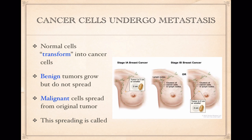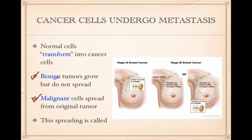Normal cells transform into cancer cells, and there are lots of different reasons for why a normal cell would transform into a cancer cell. The words benign and malignant are good to know. Benign cells are cells that have transformed and are growing tumors, but these tumors are not spreading. The word malignant is reserved for cells that are growing abnormally and spreading. This spreading is called metastasis. So if cells are spreading or metastasizing, then we can officially say that this person has a cancer.